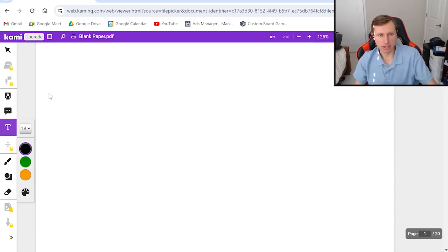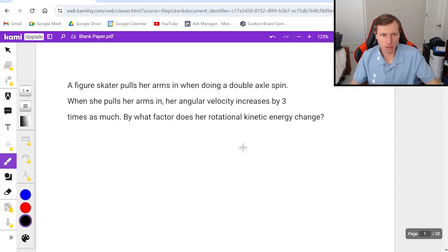So let's write out a problem here that we'll be looking at. A figure skater pulls her arms in when doing a double axel spin. When she pulls her arms in her angular velocity increases by three times as much. By what factor does her rotational kinetic energy change?